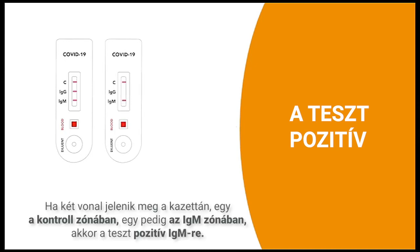If two lines appear on the cassette, one in the control zone and one in the IgM zone, the test is positive for IgM.